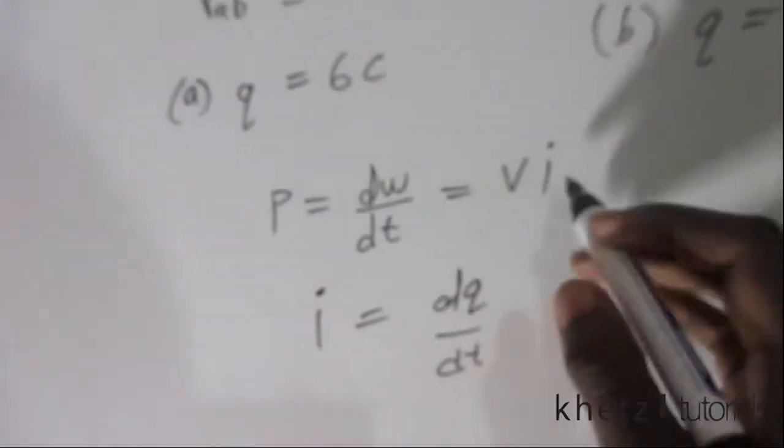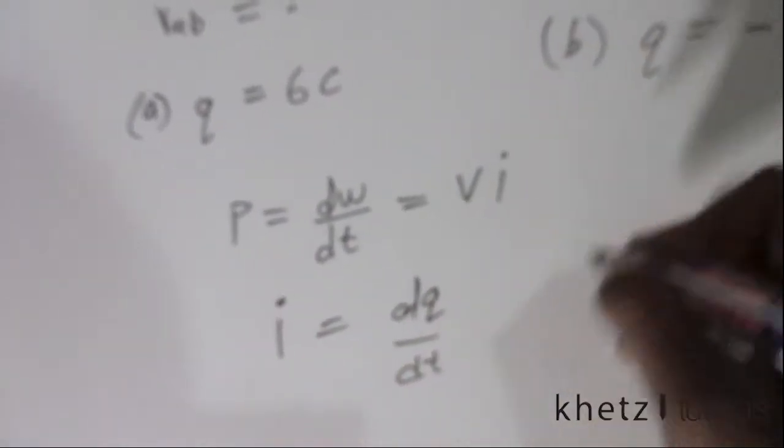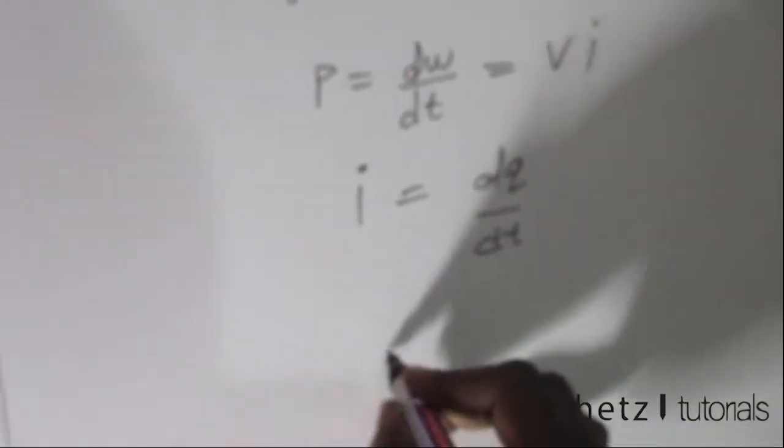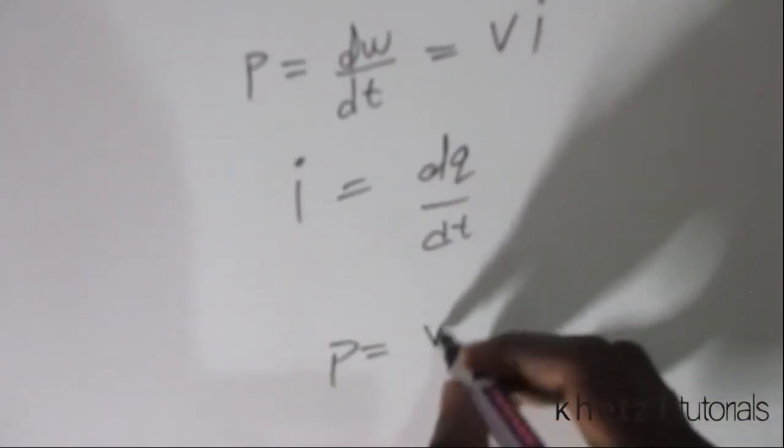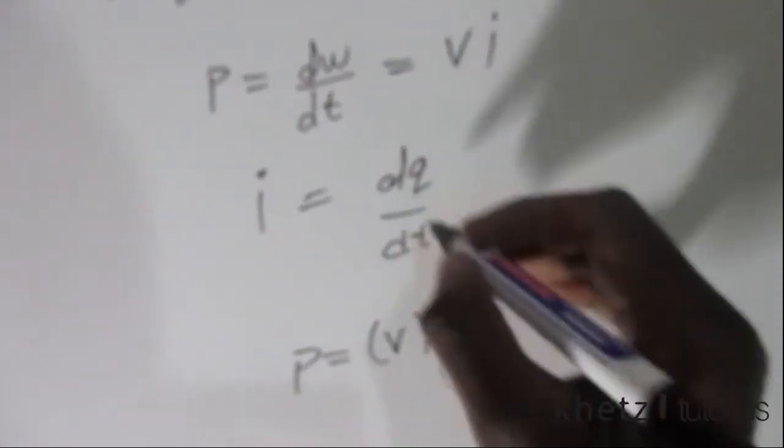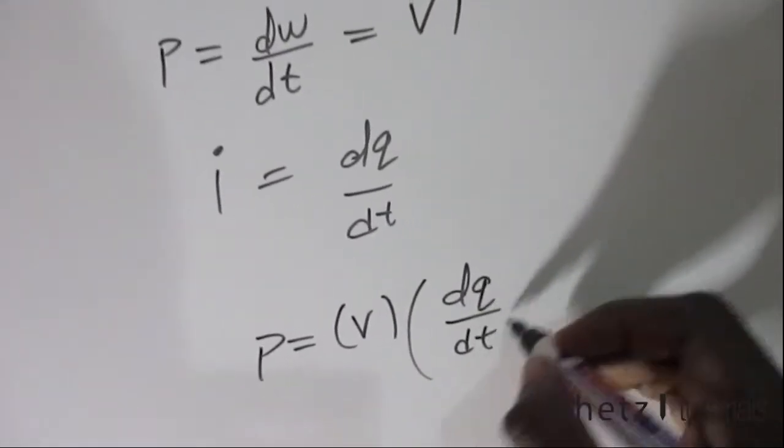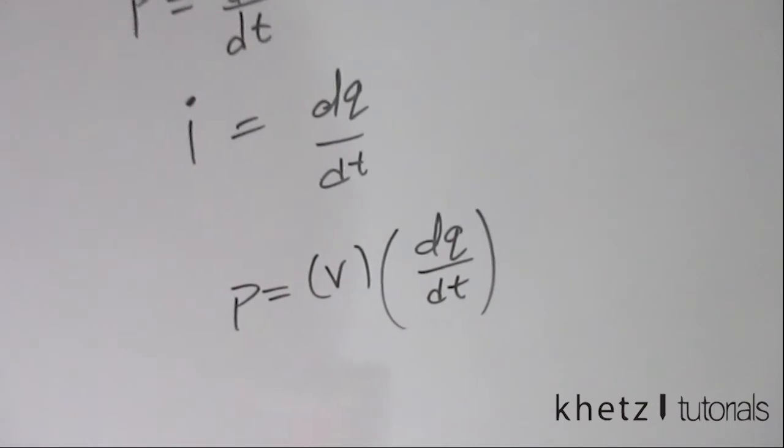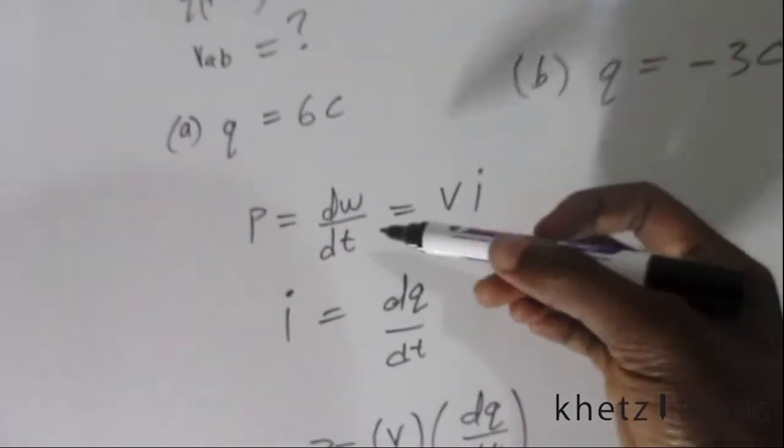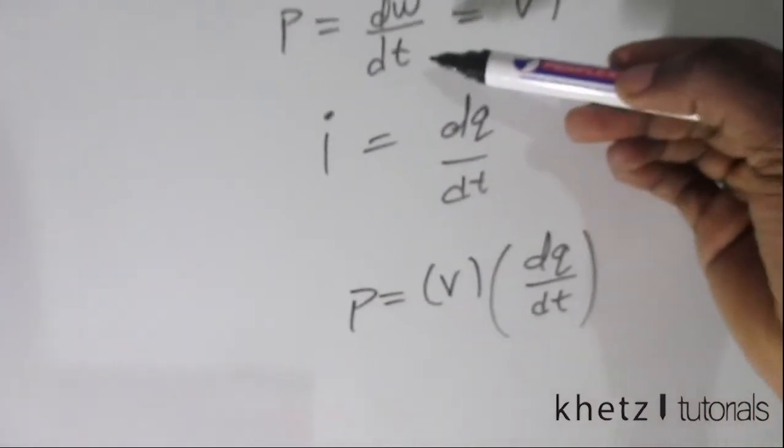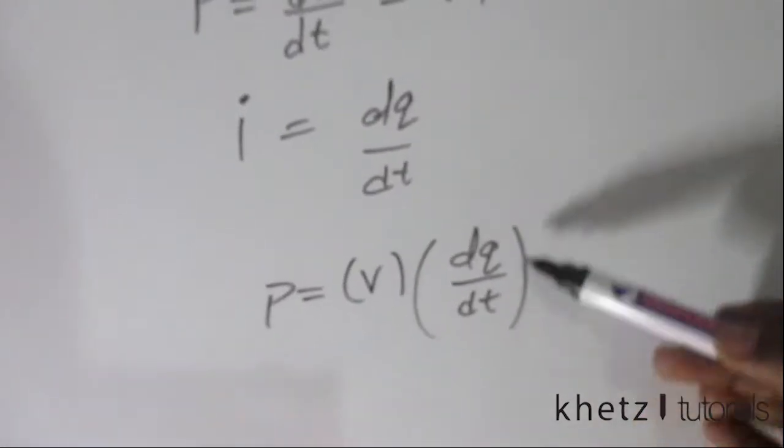So just quickly substituting that in gives us P equals V multiplied by i. We substitute it by that. Now to maintain this, what should we multiply this by?